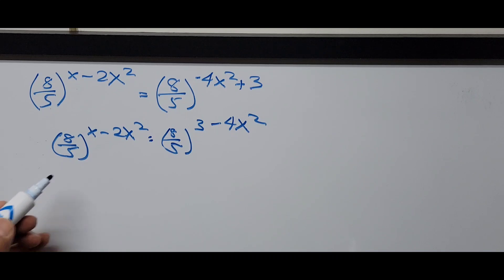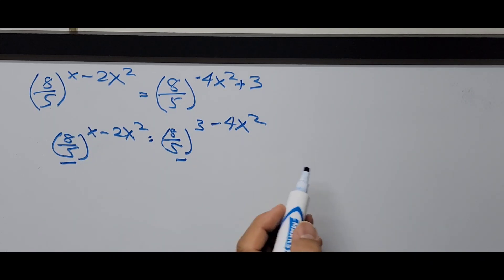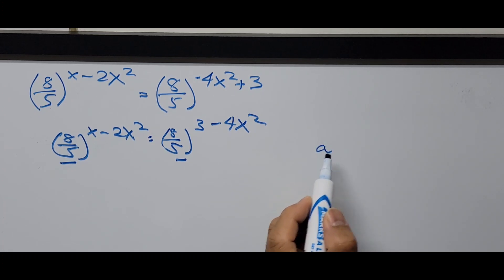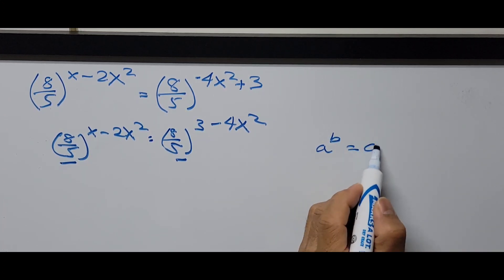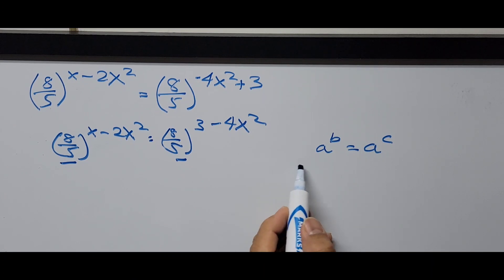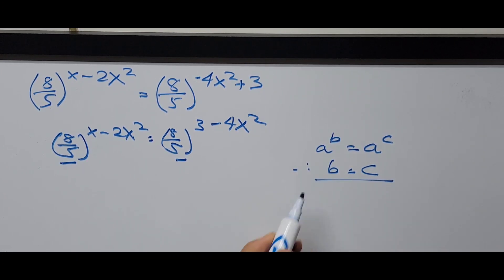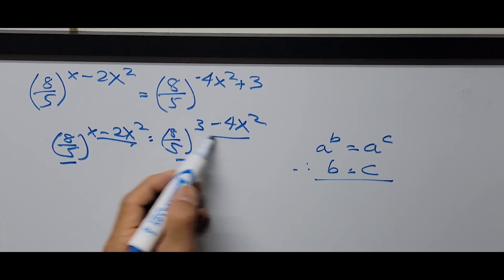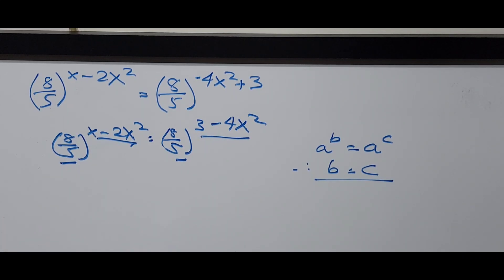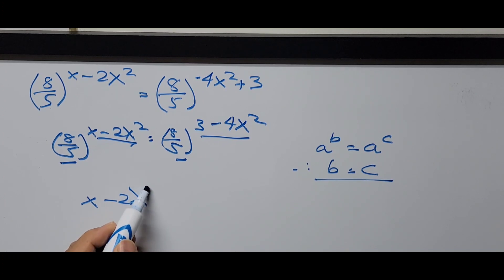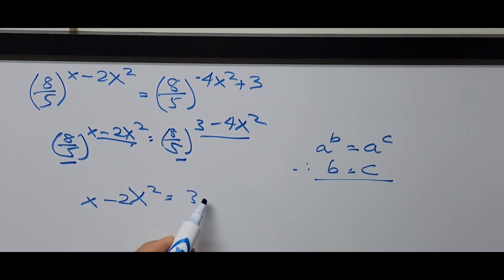The bases are now the same on both sides. Based on the rule: if a to the b equals a to the c, then b equals c — so we equate the exponents. The equation now becomes x minus 2x squared equals 3 minus 4x squared.